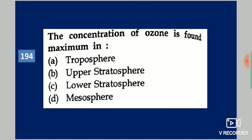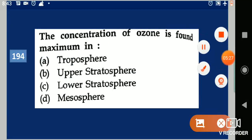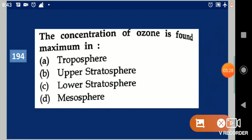Next question: The concentration of ozone is found maximum in dash. Your options are: troposphere, upper stratosphere, lower stratosphere, mesosphere. Your answer is lower stratosphere.